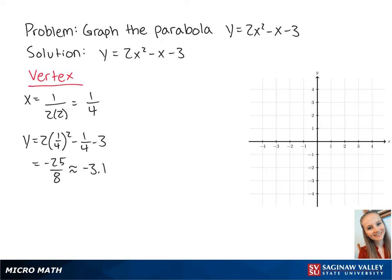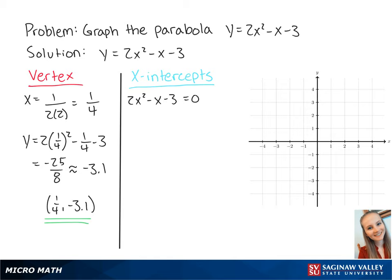So the vertex is at about 1 fourth, negative 3.1. Now we want to find the x-intercepts, which is when y is equal to 0. So we set up the equation 2x squared minus x minus 3 equals 0. The left side factors out to become 2x minus 3 times x plus 1, which is equal to 0.